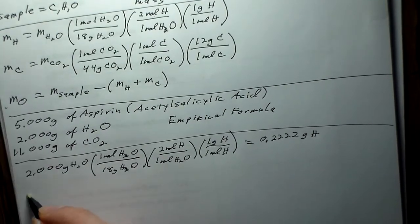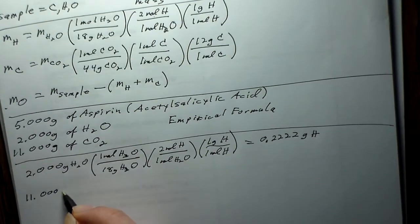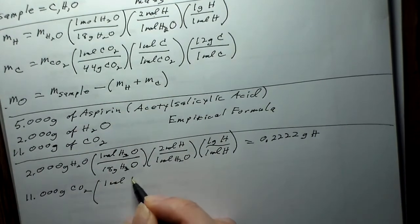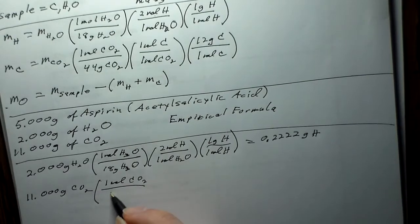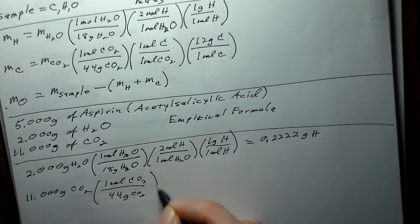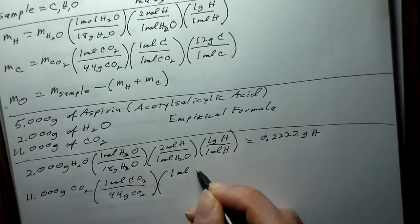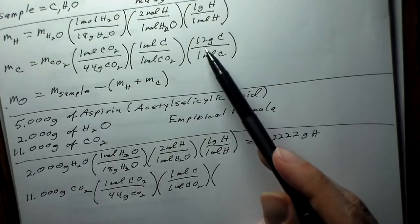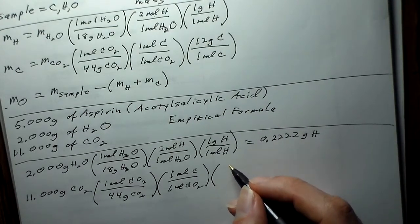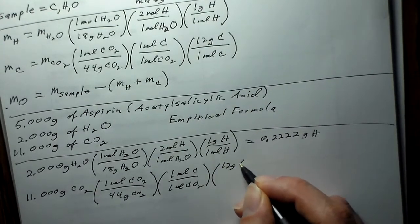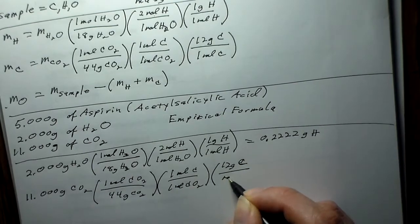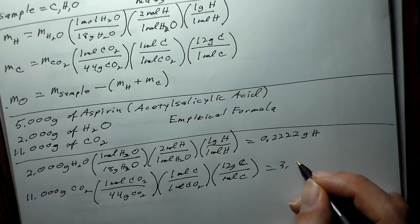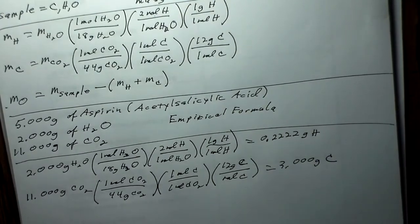Next we'll do the carbon dioxide: 11.000 grams of CO₂, times one mole of CO₂ per 44 grams of CO₂, times one mole of carbon per mole of CO₂, times 12 grams of carbon per mole of carbon. This works out to be 3.000 grams of carbon.